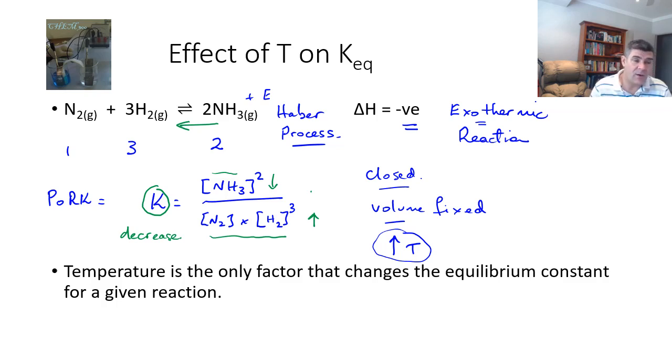This is the only factor that's actually going to change the number. The value of the equilibrium constant is temperature dependent, and that's why you will always see examples when you're calculating the equilibrium constant where the temperature is actually given. Not necessarily that you need to use that in any of your calculations, but it is a requirement for equilibrium that we specify the temperature, because we know that the equilibrium constant will change at different temperatures.